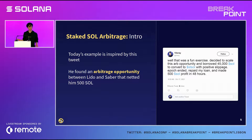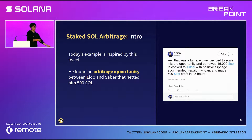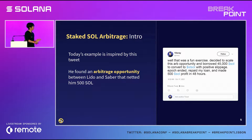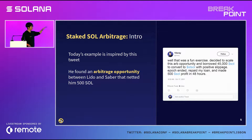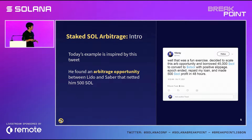The inspiration for today is a tweet from my friend 10xRay. He found that on Saber you could buy Lido Sol for cheaper than actual Sol. So he essentially just borrowed a bunch of Sol, bought Lido Sol on Saber, unstaked it, waited till the next epoch, and then made 500 Sol in profit. There are real arbitrage opportunities out there — you just have to go find them. And if you can do it programmatically, it can be a lot simpler; you don't have to be in front of your screen all day.